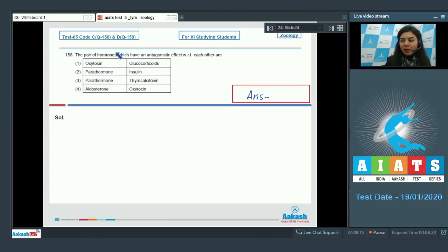Question 158. The pair of hormones which have an antagonistic effect with respect to each other are oxytocin glucocorticoids, parathormone insulin, parathormone thyrocalcitonin, aldosterone oxytocin. Let's analyze the options. Oxytocin and glucocorticoids, the functions are entirely different and they are not opposite to each other.